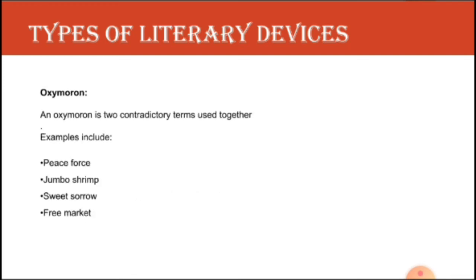This is also a very simple device. An oxymoron uses two contradictory terms together — two words that oppose each other but are used together. For example, 'peace force' — peace and force are unrelated to each other. 'Sweet sorrow' — there is sorrow, but that grief is called sweet. In reality there is no sorrow which is truly sweet, so these opposite words used together are called oxymoron.